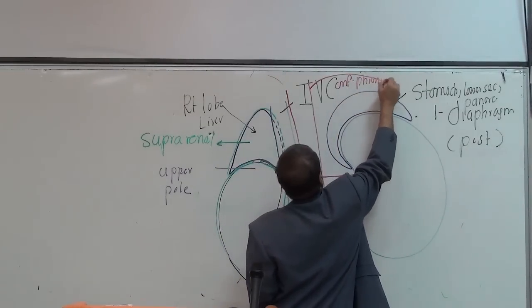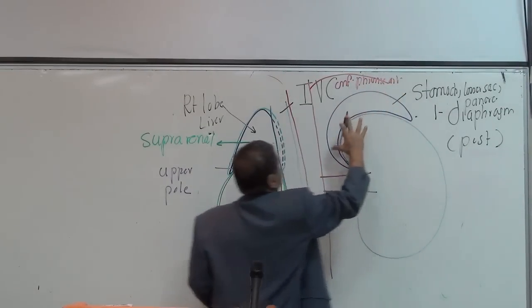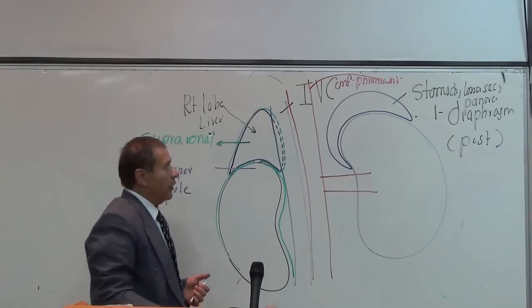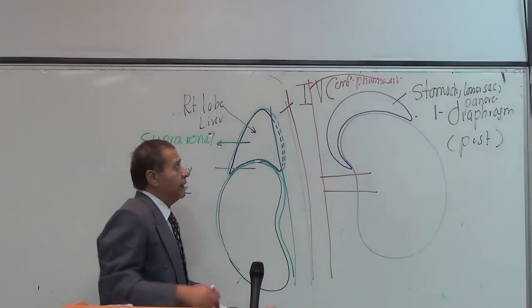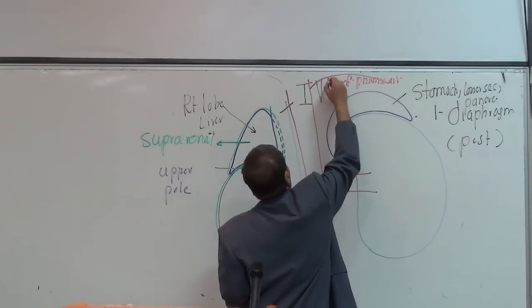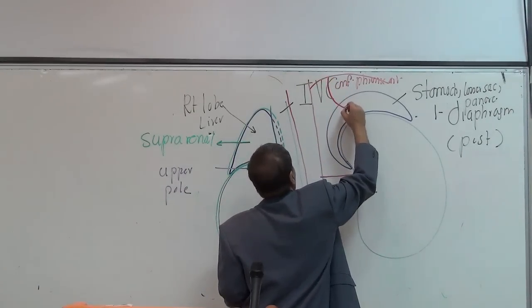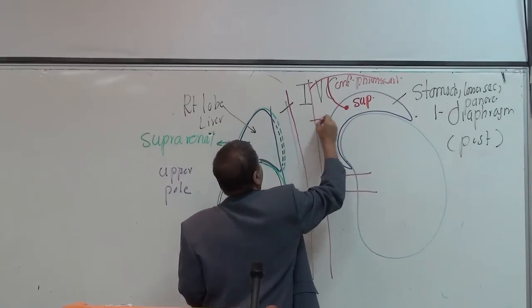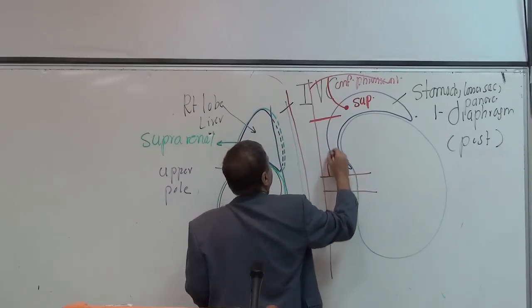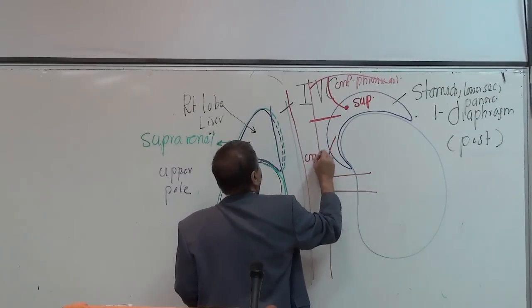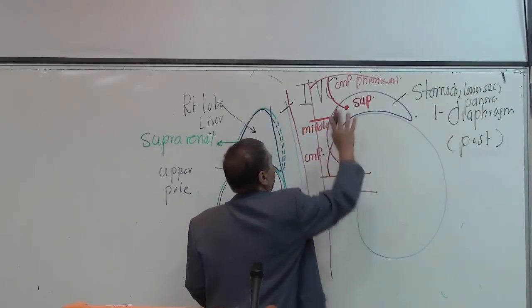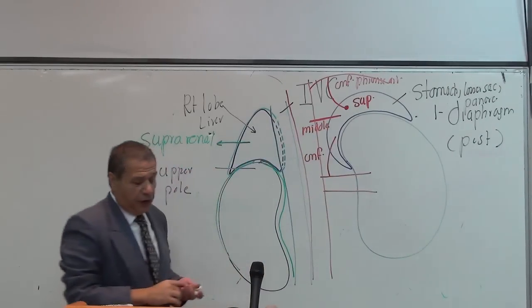The arterial supply of the suprarenal gland — right or left — comes from three main arteries: the superior suprarenal artery, which arises from the inferior phrenic artery; the middle suprarenal artery, from the abdominal aorta; and the inferior suprarenal artery, a branch from the renal artery. So there are three arteries on both sides.